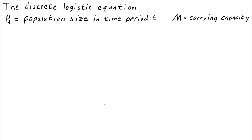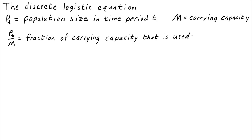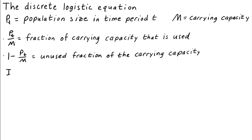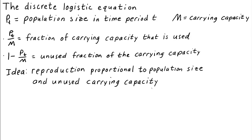To model the effect of an environmental carrying capacity, we'll let p_t be the population size in time period t and m be the carrying capacity. Then p_t over m is the fraction of the carrying capacity that is used — so if p_t over m is one-half, then the population size is half of its maximal value. Then 1 minus p_t over m is the unused fraction. The idea to incorporate the carrying capacity is to make the reproduction of the population proportional not only to p_t but also to the unused fraction of the carrying capacity. So we can write the model as p_{t+1} minus p_t — this is the change from time t to time t+1.